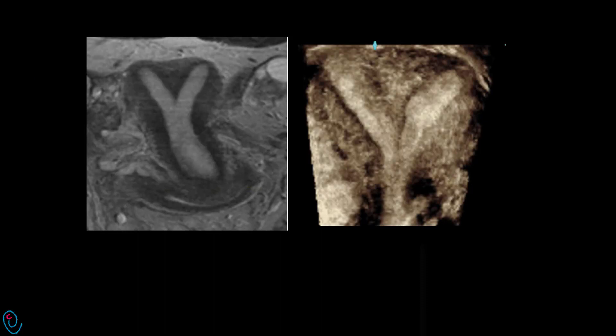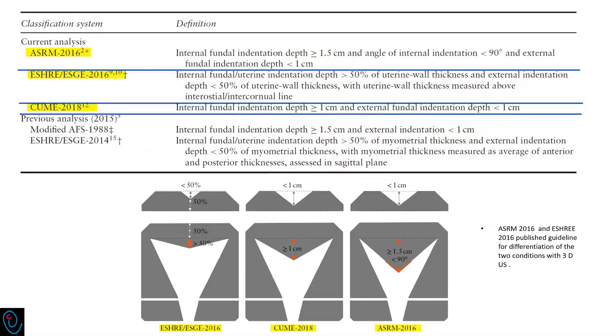3D ultrasound and MRI, on the other hand, can differentiate between septate and bicornuate uterus. ASRM and ESHRE in 2016 published their guidelines about differentiation between the two conditions using 3D ultrasound.